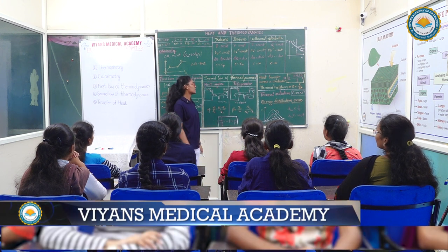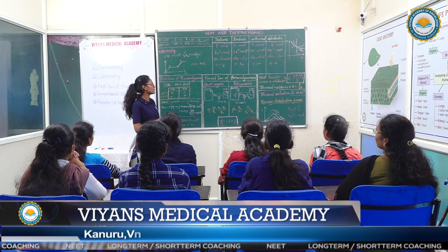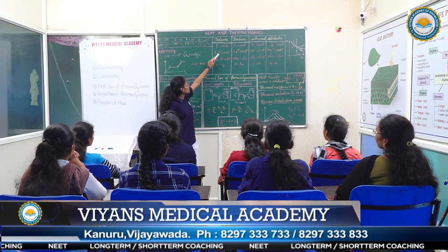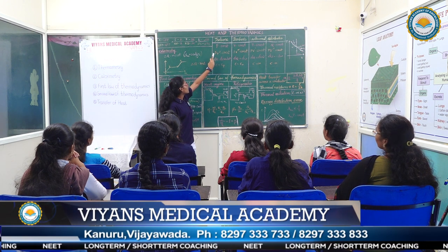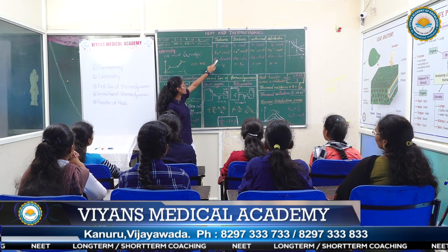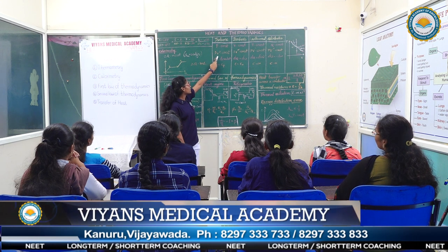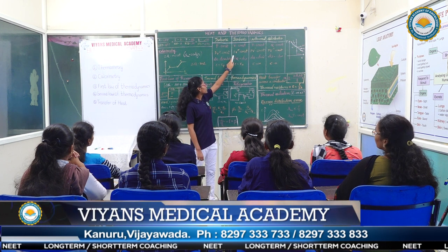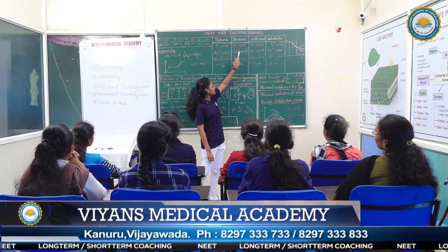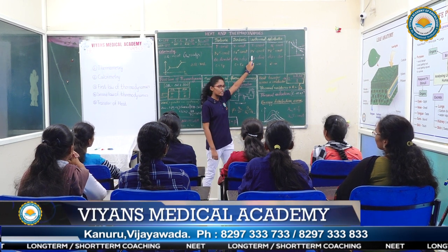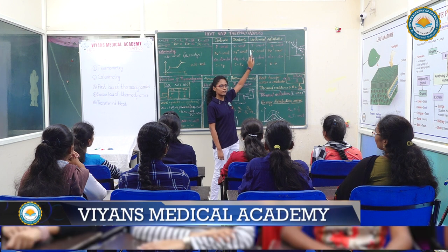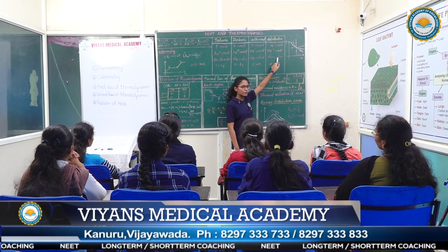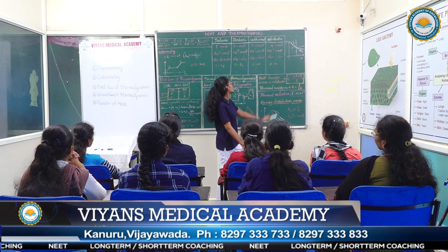Let us see the PV relations of these different thermodynamic processes. As P is constant in isobaric, we write PV^0 = constant. In isochoric process, PV^∞ = constant. In isothermal process, PV^1 = constant. And in adiabatic process, PV^γ = constant.